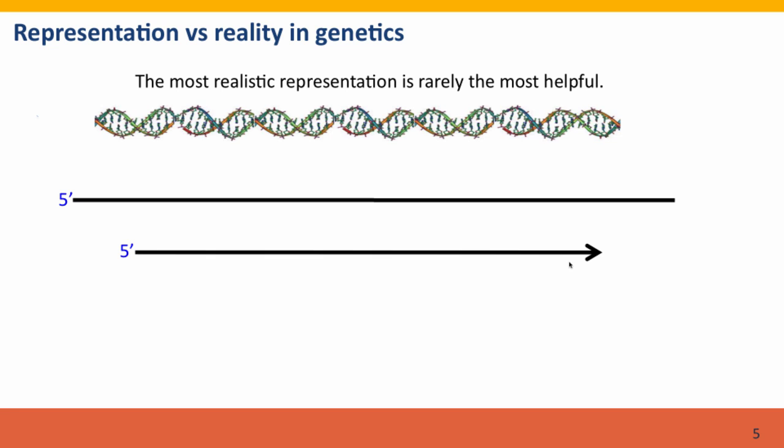By convention, when we think about DNA, when we represent a single-stranded DNA, we generally represent it with the 5' end on the left and the 3' end on the right. Just as there's a convention for text, the same sort of convention applies for DNA.